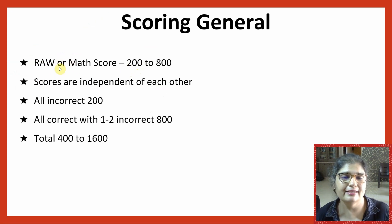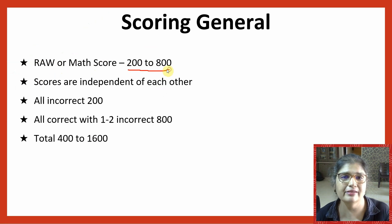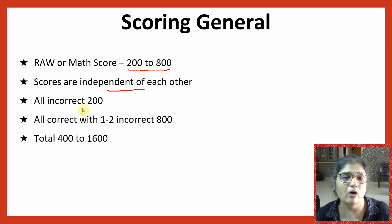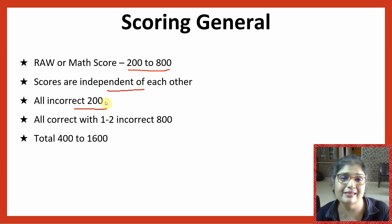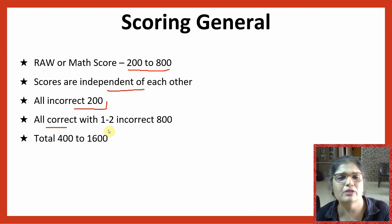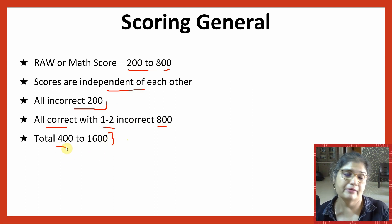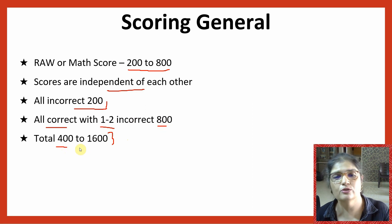You get your reading, writing, or math — any of the two sections — the score will always lie between 200 to 800, and the scores are independent of each other. If you get 300 in reading and writing, that in no way will make any difference to your math score. If you get all questions incorrect, you get a 200. Even with some questions correct, you can still get a 200. With all questions correct, or even with one or two incorrect, you can get a score of 800. The total between both sections ranges from a minimum of 400 to a maximum of 1600.